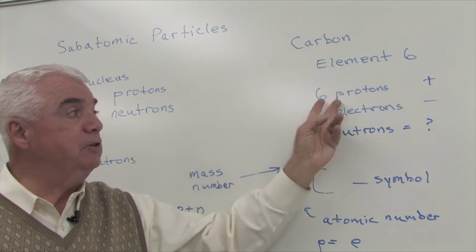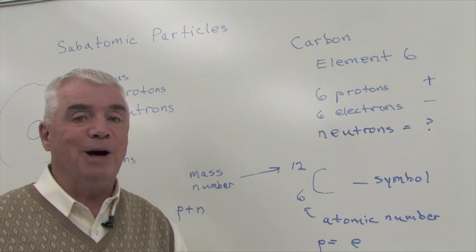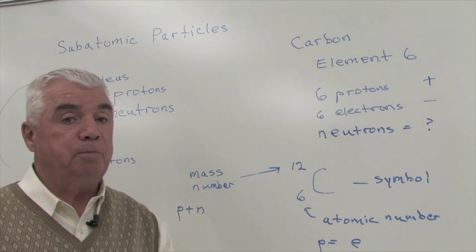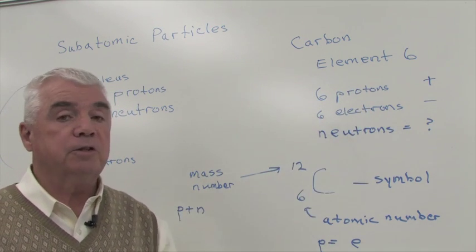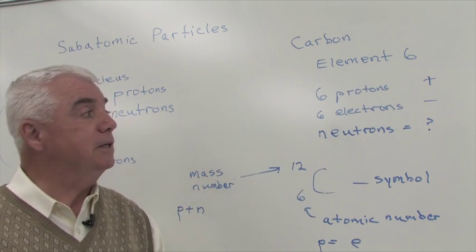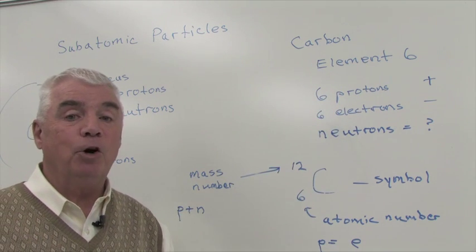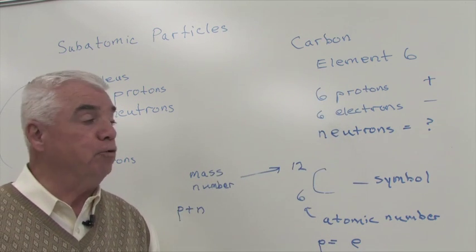So carbon has six protons, and those protons each carry a positive charge. Balancing that six positive charge is our six electrons with negative charges. So the sequence number for any element tells us the number of protons, and it tells us the number of electrons if the atom is electrically neutral.